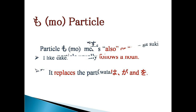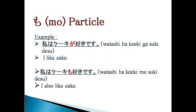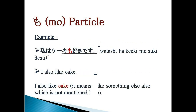Let's see the example. WATASHIWA KEKI GA SUKI DESU means 'I like cake.' Another sentence is WATASHIWA KEKI MO SUKI DESU, which means 'I also like cake.' When we use the particle MO, it becomes 'also' — meaning there is something else which I like. In addition, I like cake also.